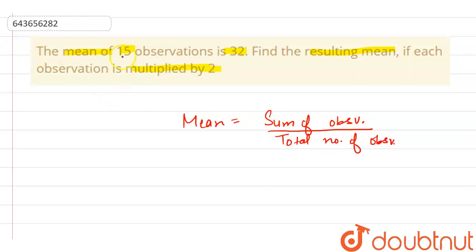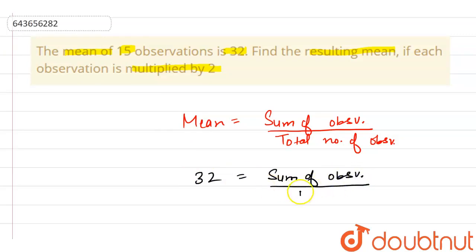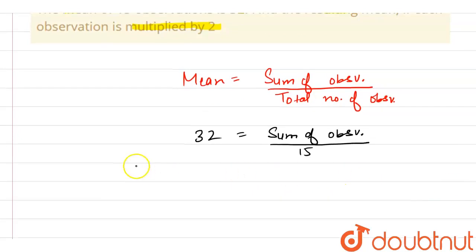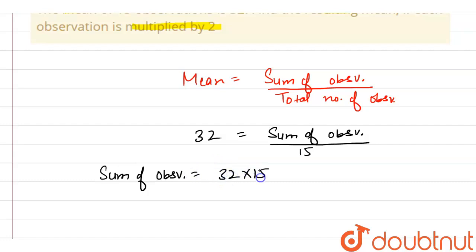As it is given that the mean of 15 observations is 32, this means 32 equals the sum of observations divided by 15. So we can write that the sum of observations is 32 into 15, which equals 480. This is the sum before multiplying by 2.